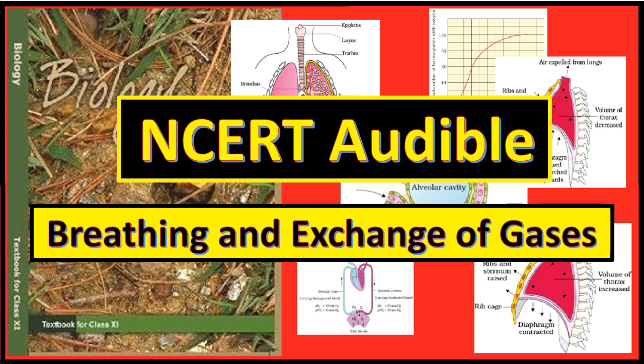Inspiratory reserve volume (IRV) is the additional volume of air a person can inspire by forceful inspiration — averages 2,500 to 3,000 ml. Expiratory reserve volume (ERV) is the additional volume of air that a person can expire by forceful expiration — averages 1,000 to 1,100 ml. Residual volume (RV) is the volume of air remaining in the lungs even after a forcible expiration — averages around 1,100 to 1,200 ml. By adding up a few of these respiratory volumes, one can derive various pulmonary capacities used in clinical diagnosis. Inspiratory capacity includes tidal volume and IRV. Expiratory capacity includes tidal volume and ERV. Functional residual capacity includes ERV and residual volume.